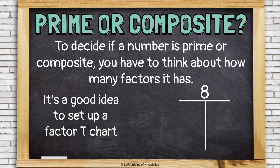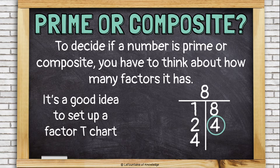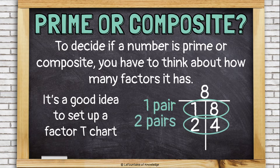To decide if a number is prime or composite, you have to think about how many factors it has. It's a good idea to set up a factor T-chart. Let's try using 8. We have the freebie factor pair, of course: 1 times 8 is 8. Then we think about 2 — 2 times 4 is 8. What about 3? Can I multiply 3 by anything to get 8? No. How about 4? I already have 4 on my factor T-chart, so that means I'm done. The factors of 8 are 1, 8, 2, and 4. It has 2 factor pairs, and that makes 8 a composite number.